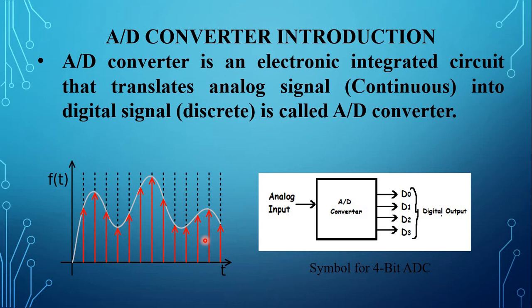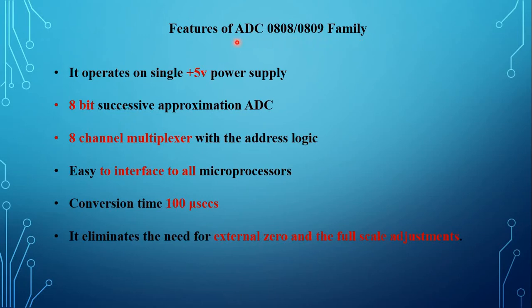The second diagram shows the A to D converter. This is the symbol of a 4-bit ADC. The input is an analog continuous waveform signal, which is converted into 4-bit binary digits: D0, D1, D2, and D3 as digital outputs. The A to D converter is a quantizing process whereby an analog signal is converted into an equivalent binary word.